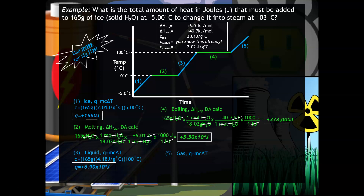The final step is heating the steam. We use 165 grams times the specific heat of steam, with a temperature change of 3 degrees Celsius (from 100 to 103°C). When you do this calculation, you get approximately 1000 joules. To maintain proper significant figures, this is expressed in scientific notation.